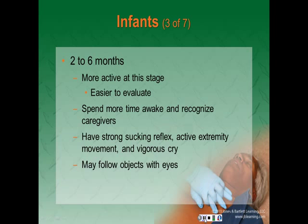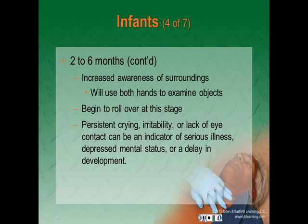From two to six months, infants are more active, making them easier to evaluate. They spend more time awake and do recognize their caregivers. They will often have a strong sucking reflex, active extremity movement, and a vigorous cry. They may follow objects with their eyes and have increased awareness of their surroundings. They will begin to roll over at this stage. Remember that persistent crying, irritability, or lack of eye contact may be an indicator of serious illness, a depressed mental state, or a delay in development.